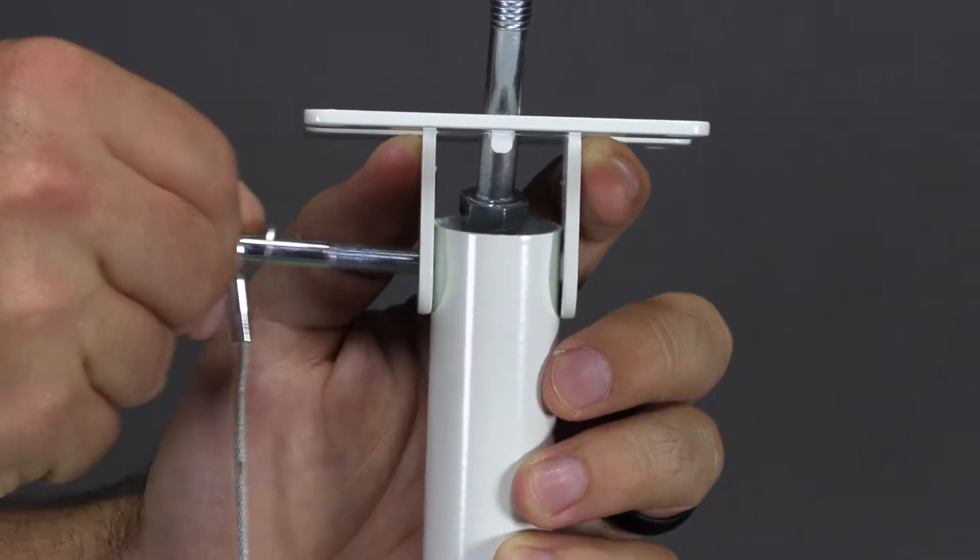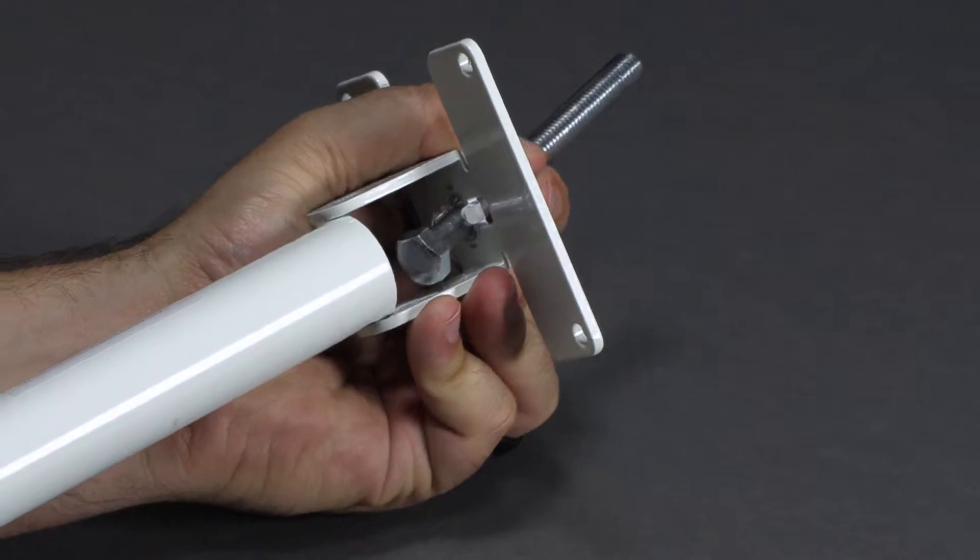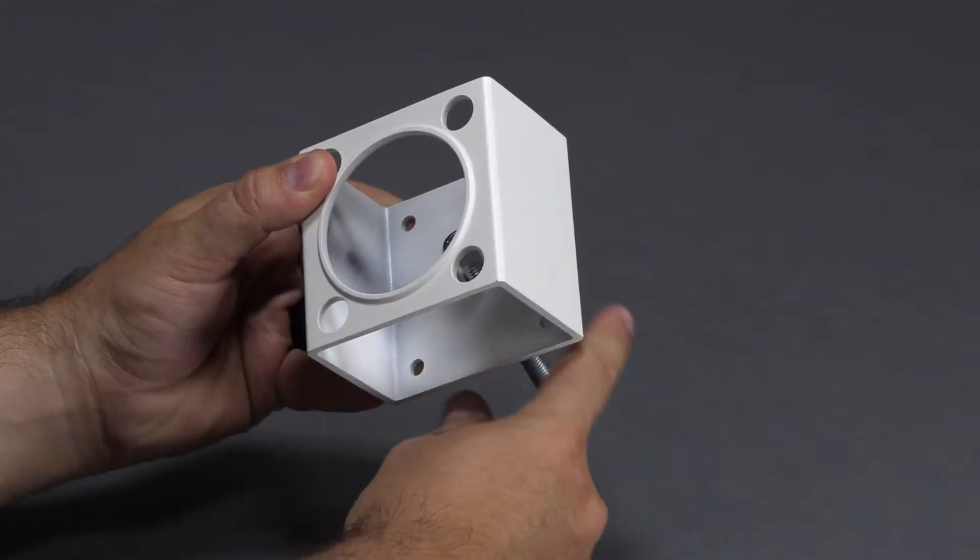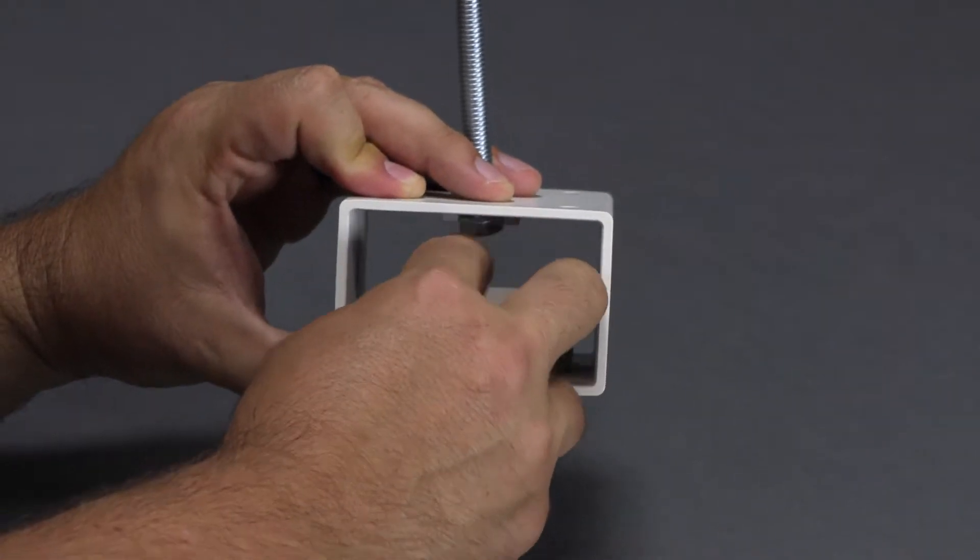To install, start by disassembling the top of the camera pole. With the camera pole removed, insert the bolt and the ball into the box bracket.